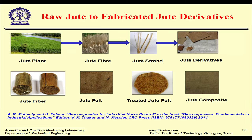This is the story of jute. From the jute plant, fibers are extracted. A single strand is the jute strand. From this strand, we can develop different types of acoustical materials — jute derivatives: jute fiber, jute felt, and treated jute felt. We can also develop jute composites from jute felt.